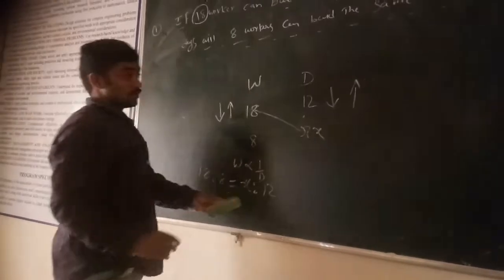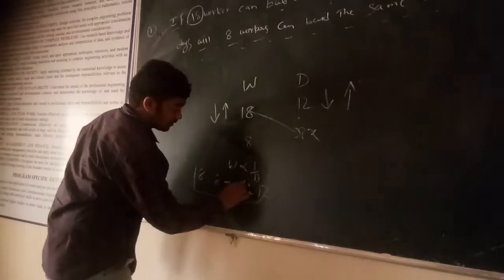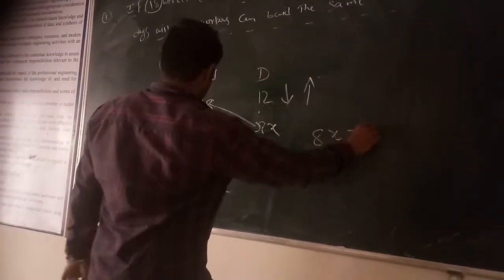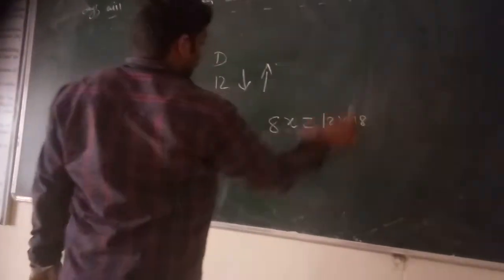We know that in ratios, product of exterior is equal to product of interior. 8x is equal to 12 into 18. Okay.